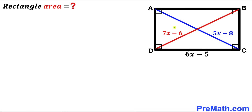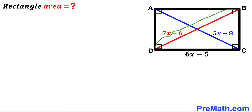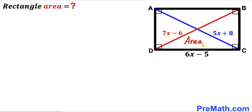Welcome to pre-math. In this video we have rectangle ABCD along with two diagonals AC and BD. The diagonal AC is represented by 5x plus 8, whereas diagonal BD is 7x minus 6. Moreover, the side length CD of this rectangle is 6x minus 5. Our task is to calculate the area of this rectangle ABCD.